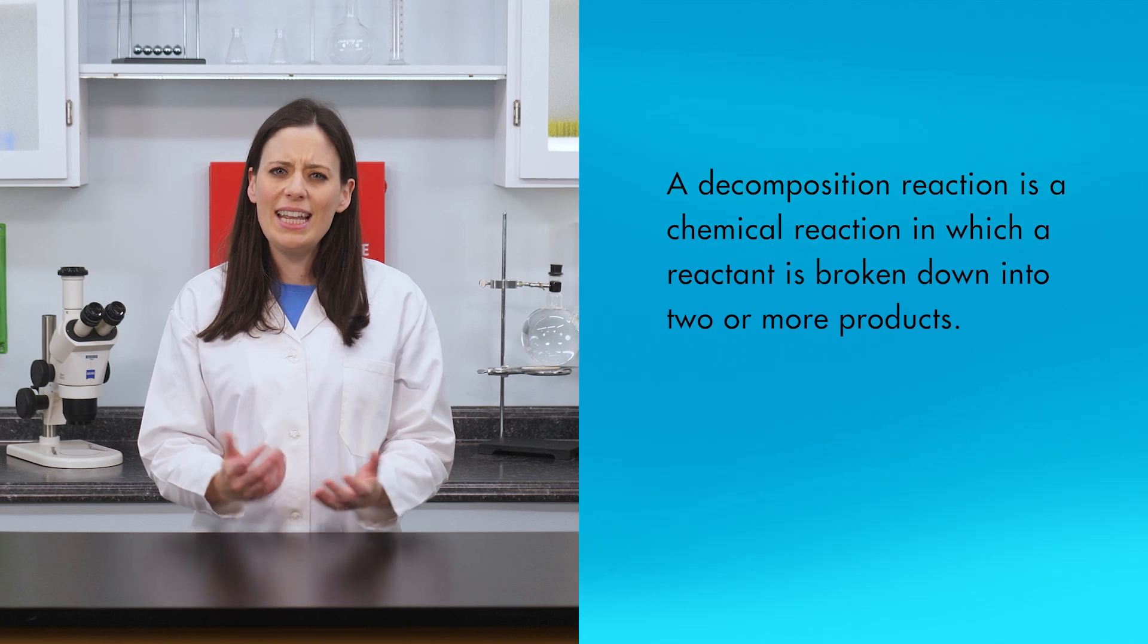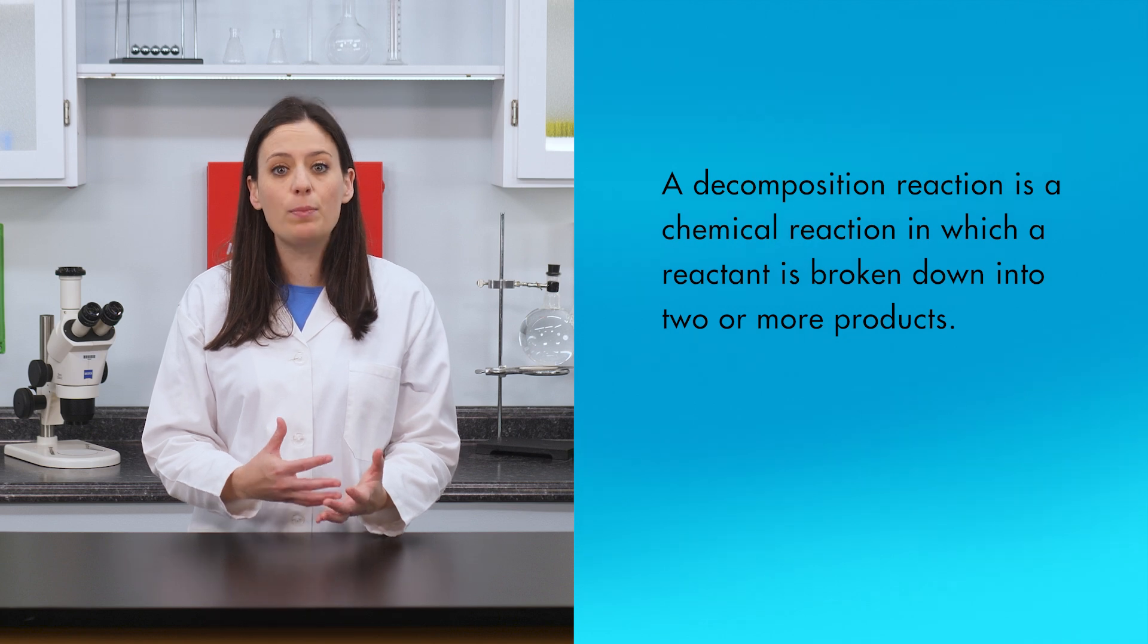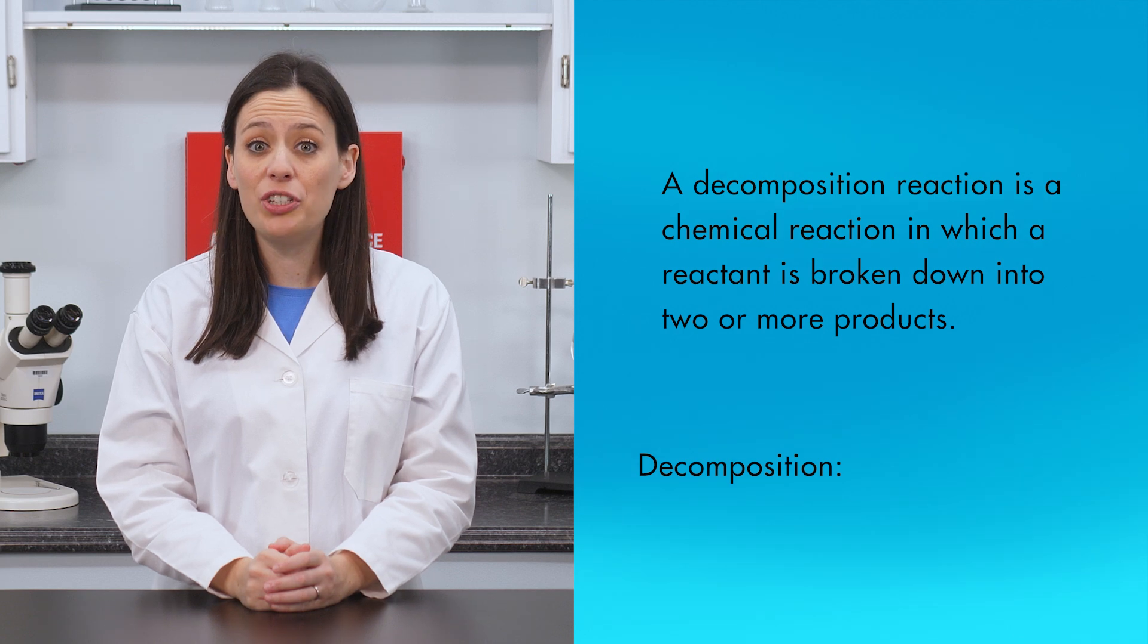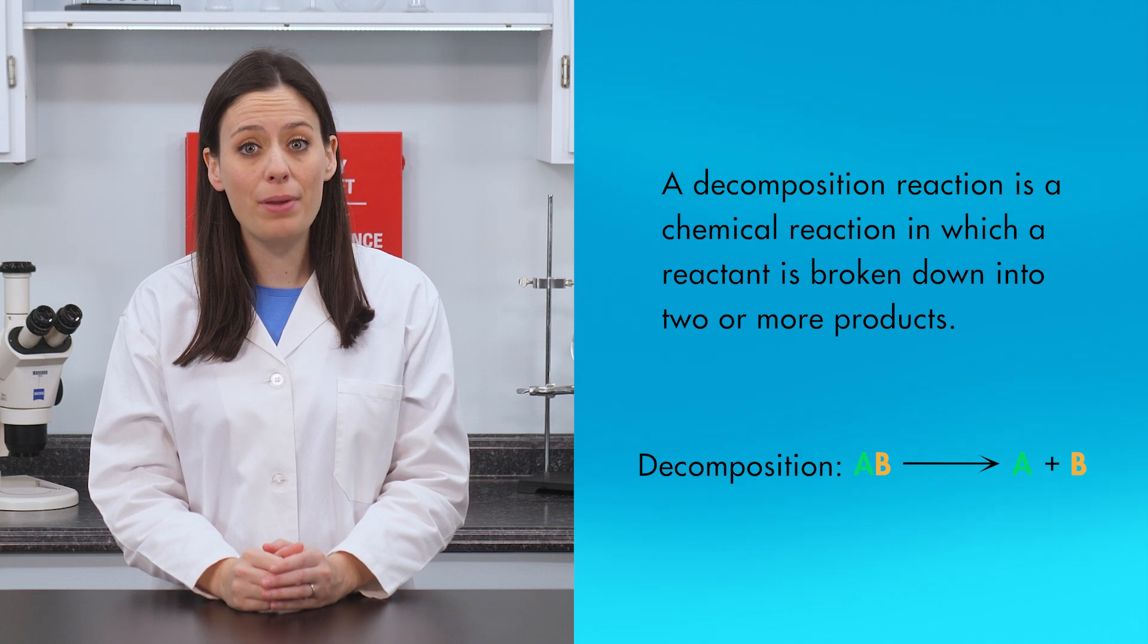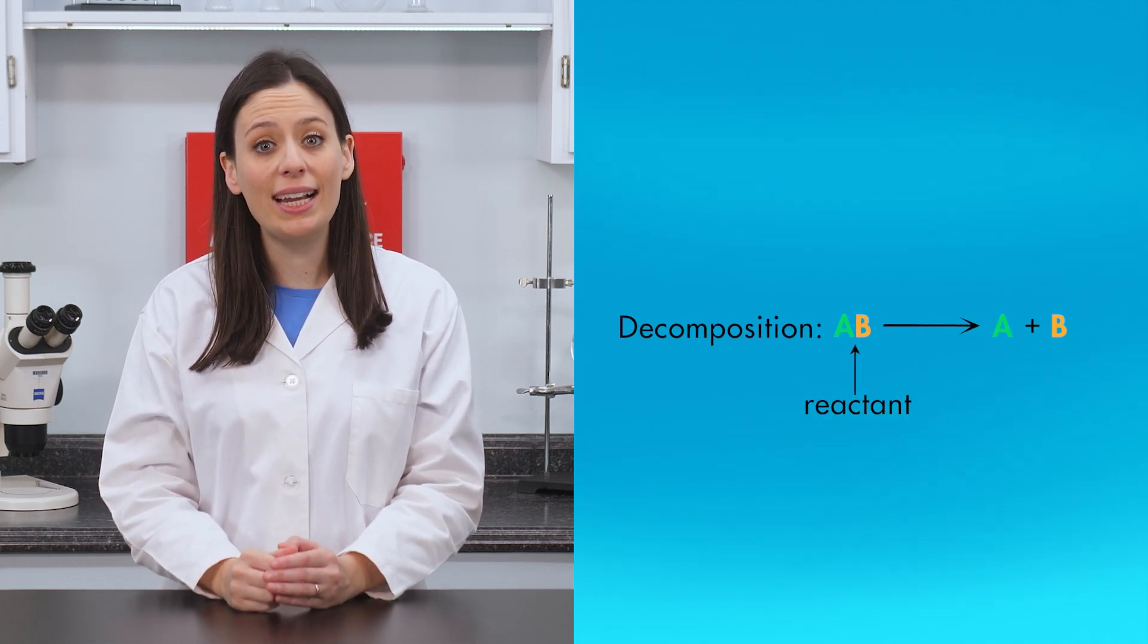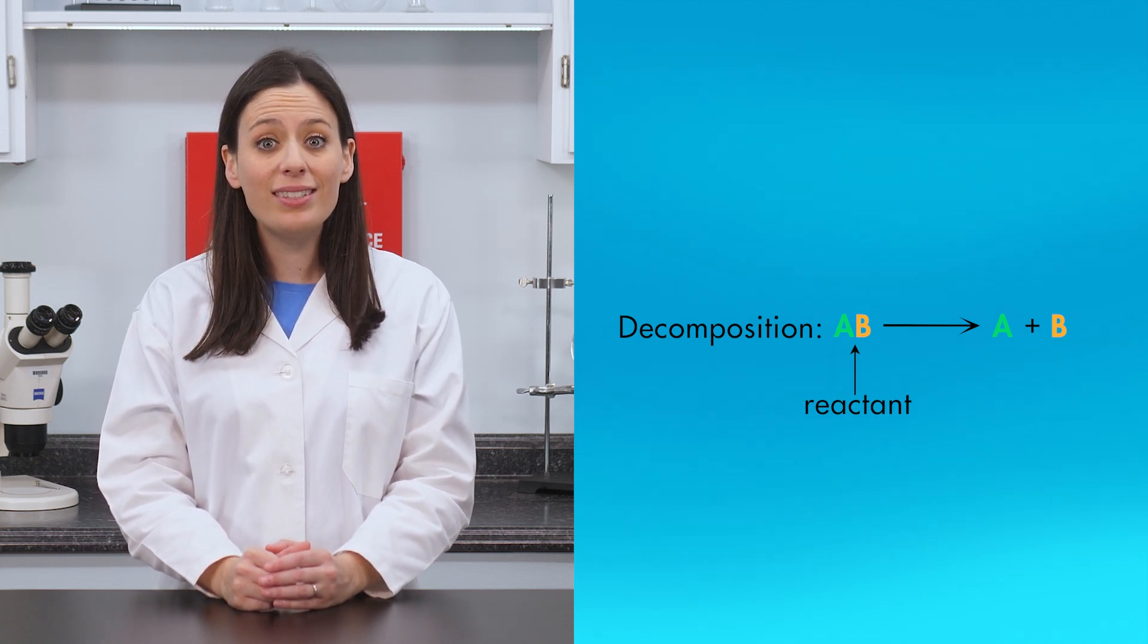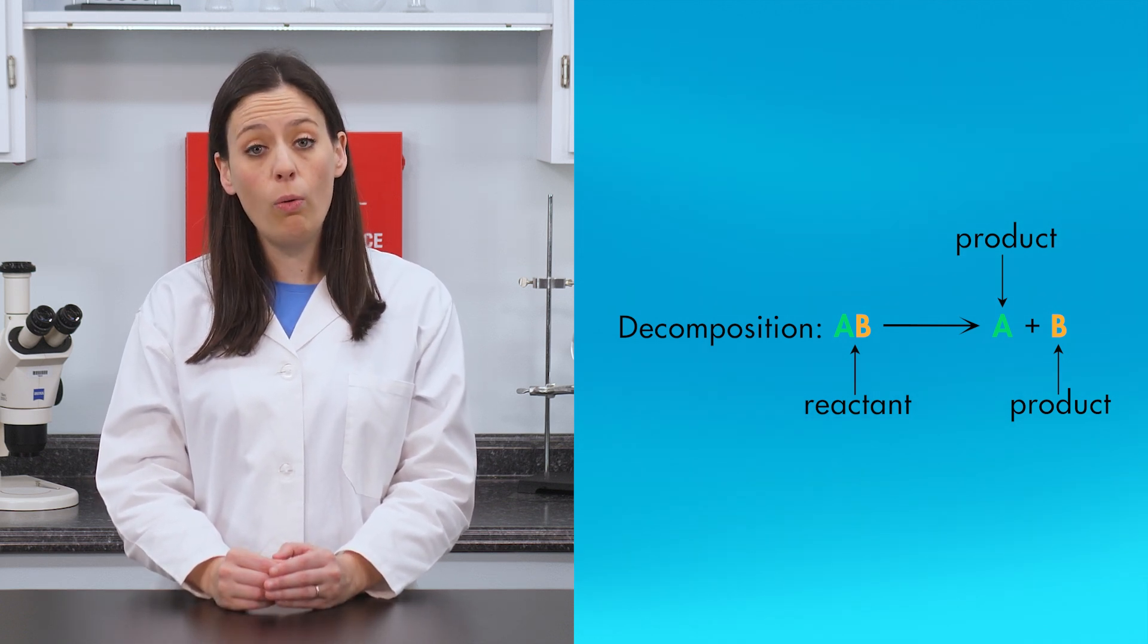Synthesis combines two reactants into a single product. The opposite of synthesis is decomposition. A decomposition reaction is a chemical reaction in which a reactant is broken down into two or more products. The general form for a decomposition reaction is AB yields A plus B. AB is the reactant, which is always a compound. AB breaks down into products A and B, which may be elements or compounds.